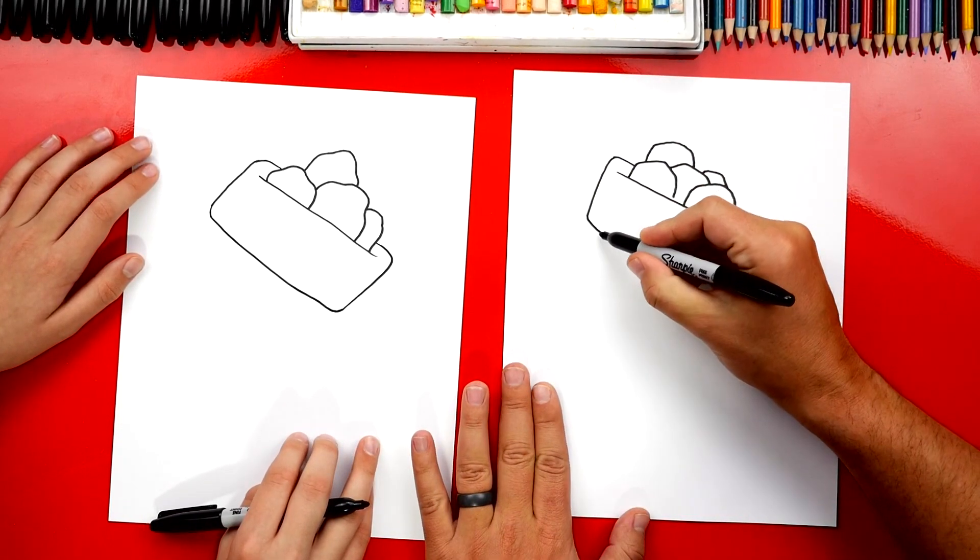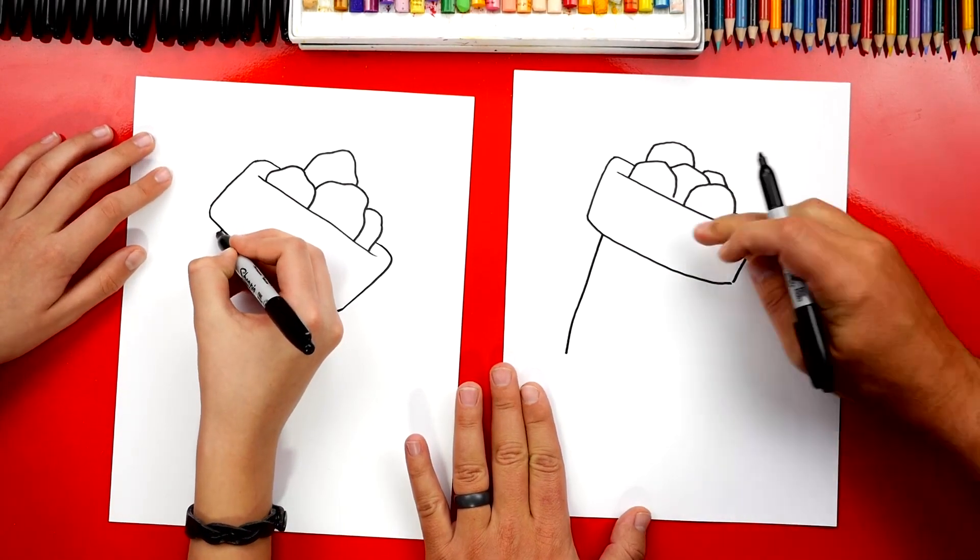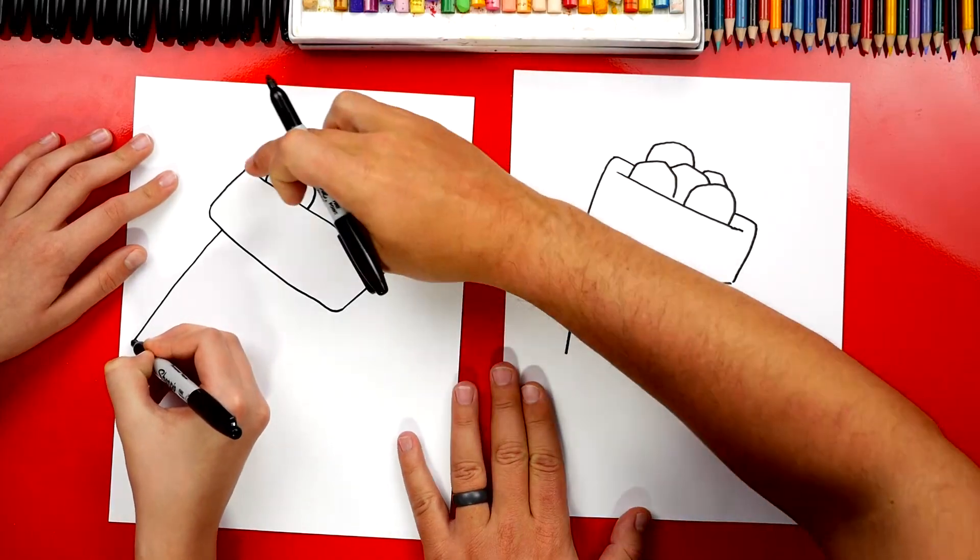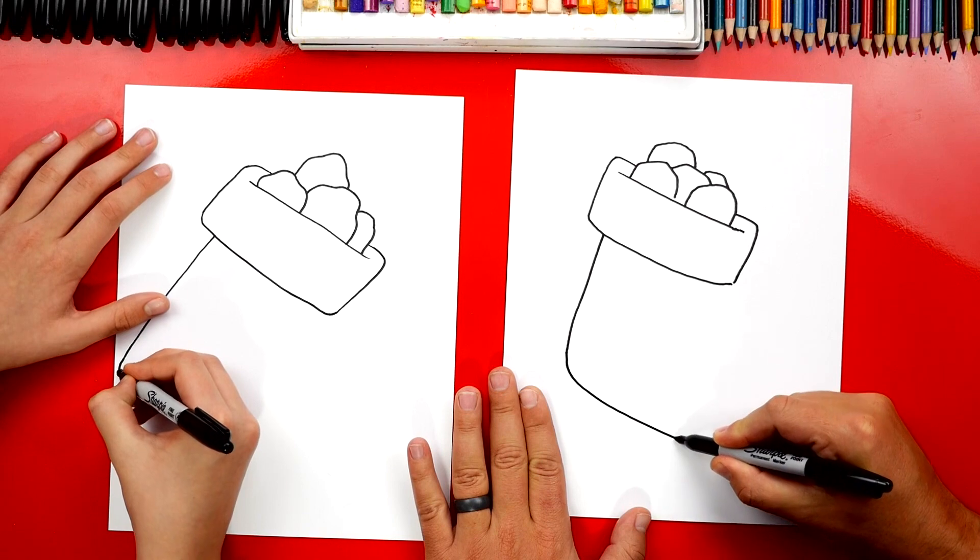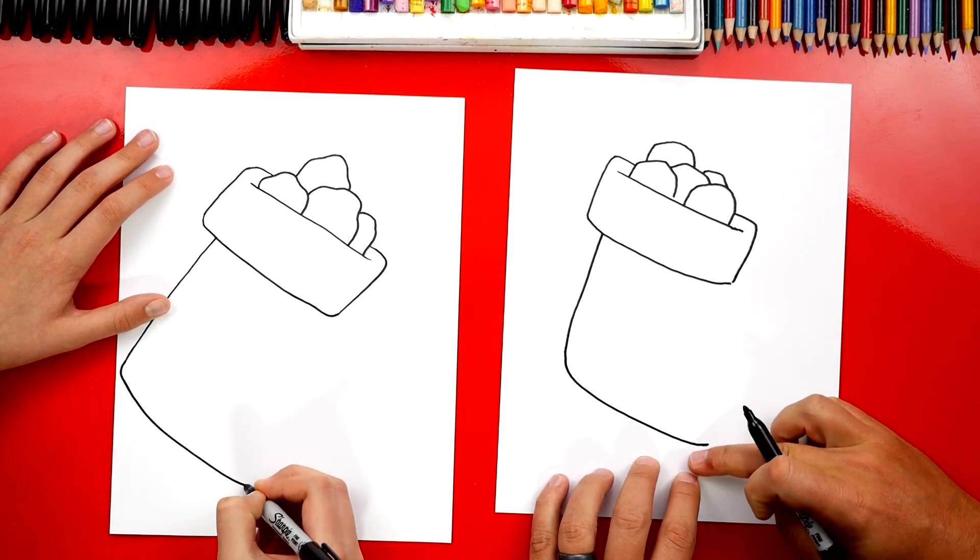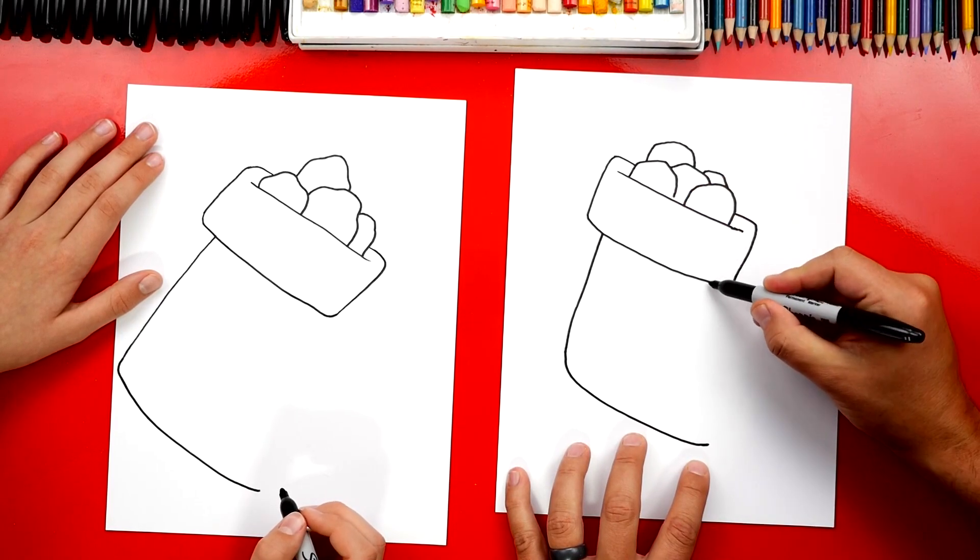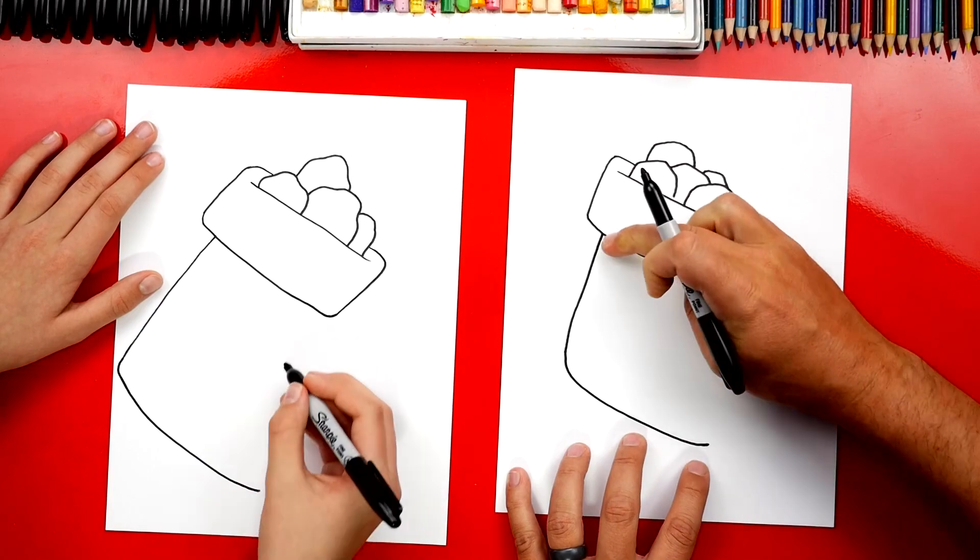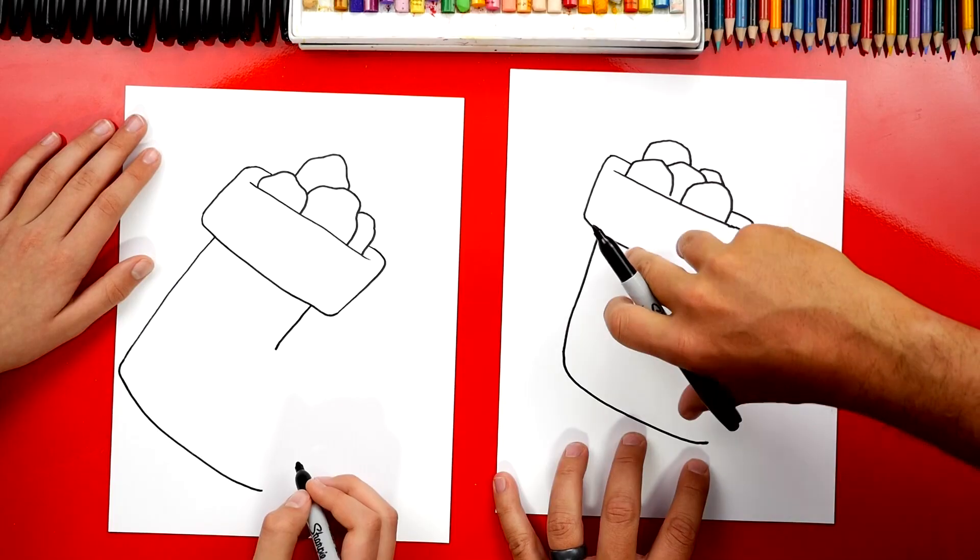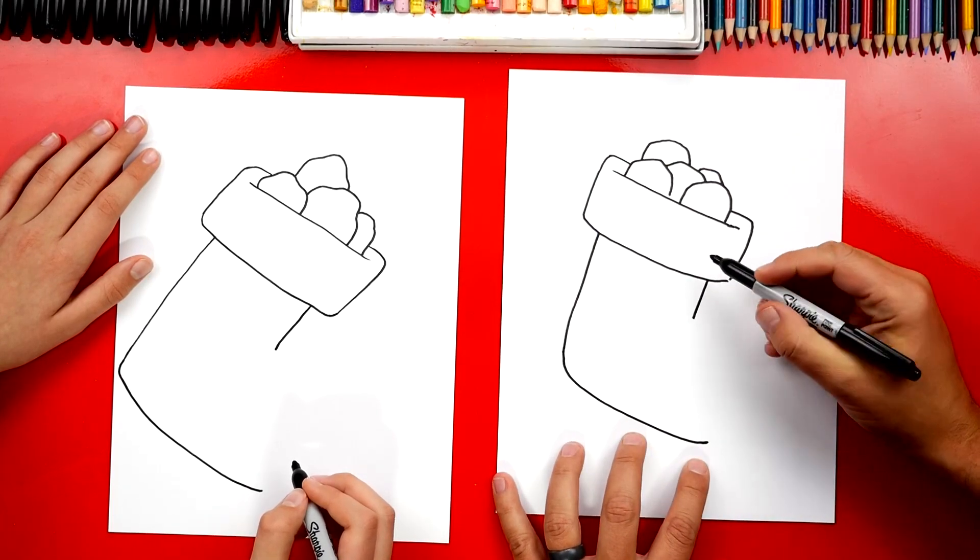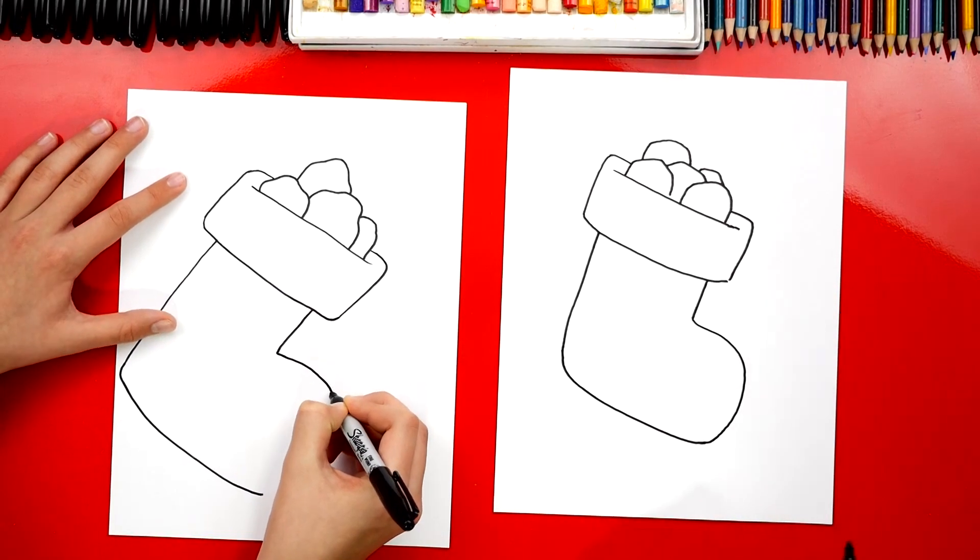Now let's draw the rest of our stocking. I'm gonna start in just a little and draw another diagonal line that comes down further, matching the same direction we drew right here. Then we can curve for the heel and draw the bottom of the stocking. Then I'm gonna draw the front of our stocking with a line that matches this line. This makes our stocking look like it's tipped or hanging. Then we're gonna draw a curve that comes around like this and curves down and connects to the bottom.